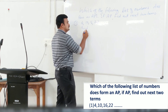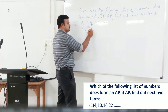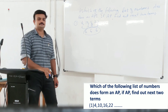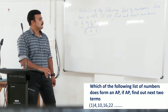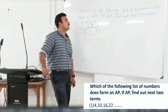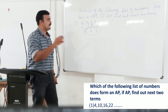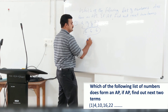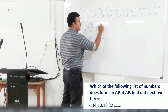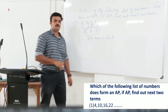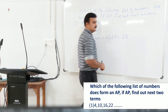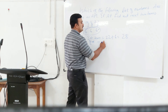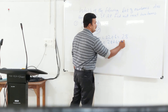10 minus 4 is equal to 6. Then 16 minus 10 is equal to 6. 22 minus 16 is equal to 6. So the common difference is the same here, so this is an AP series. Then we have to find out the next two terms. We can add 6 to the last term. The next term is 22 plus 6 equals 28. The second next term is 28 plus 6 equals 34.